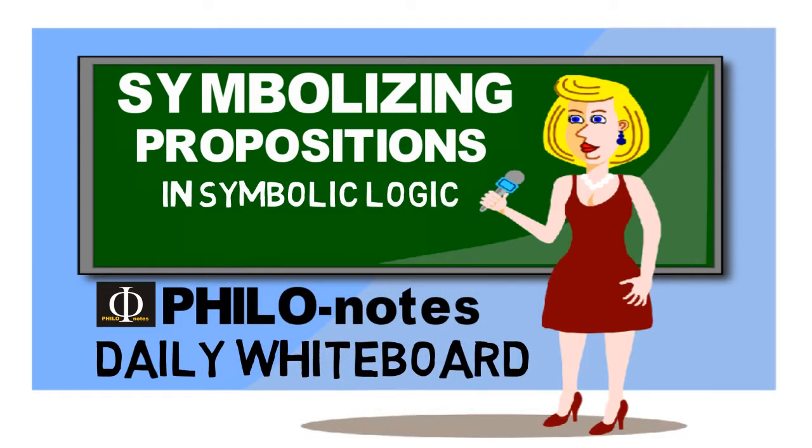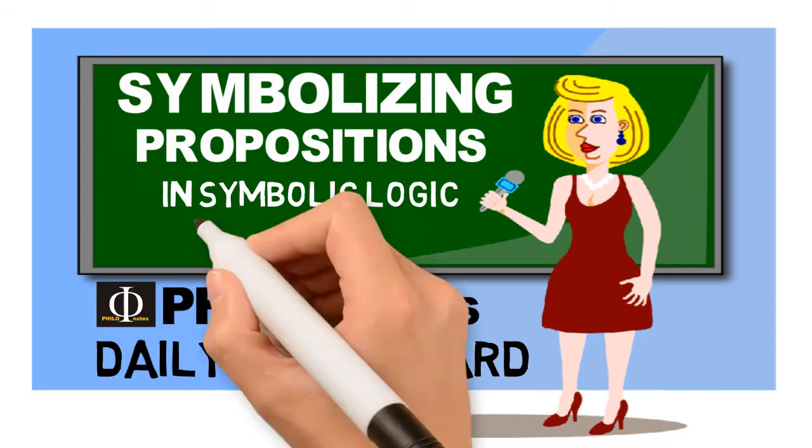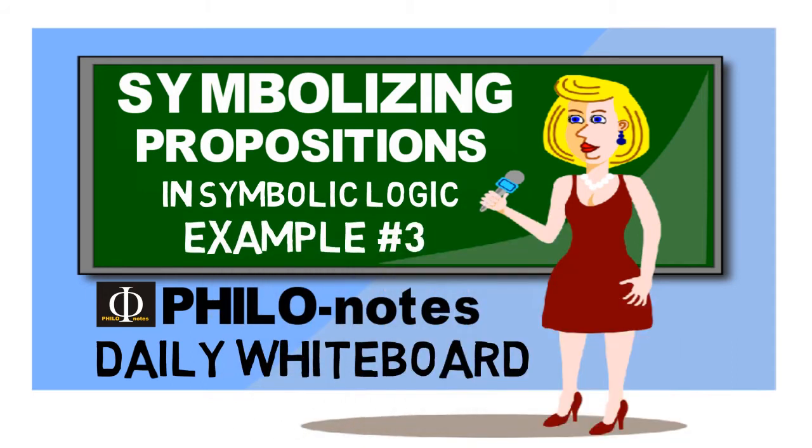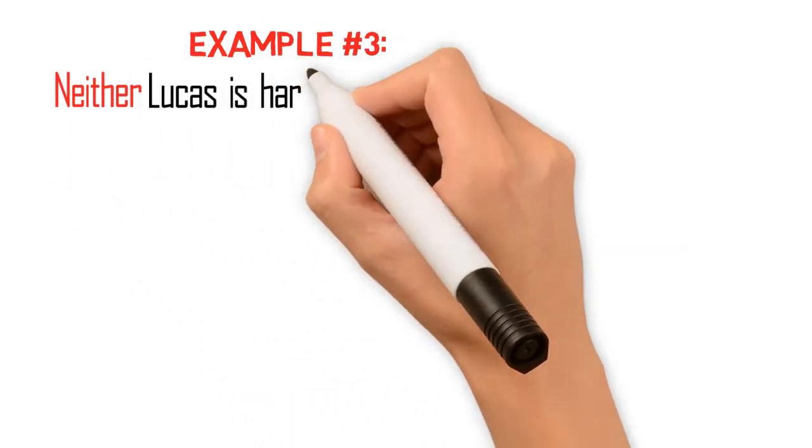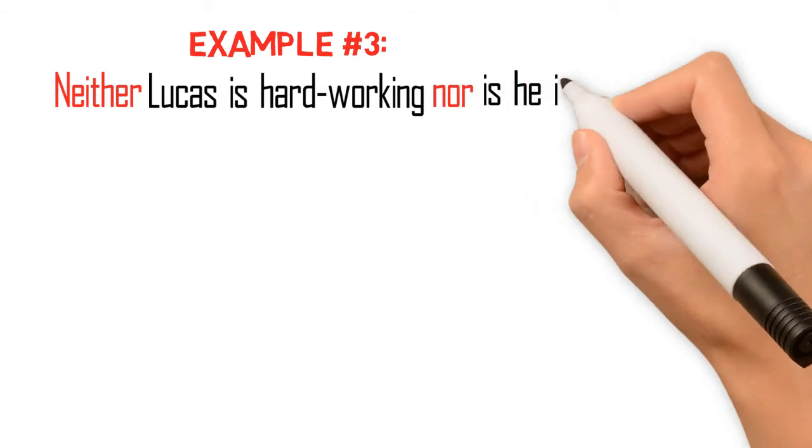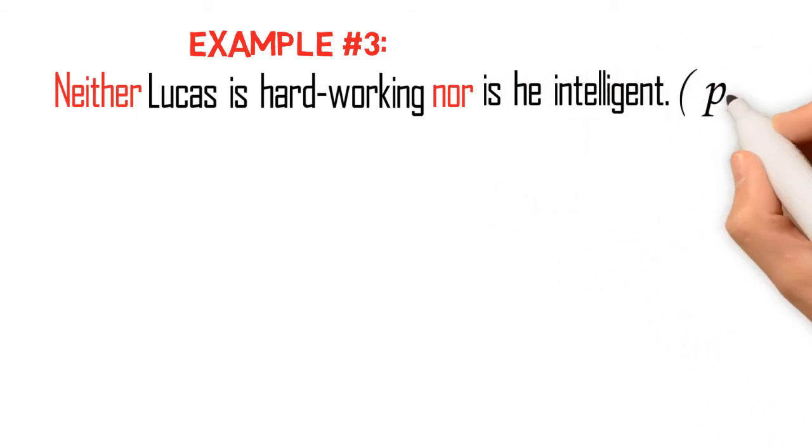Now, let's analyze and symbolize example number 3. Suppose we have this proposition: Neither Lucas is hardworking nor is he intelligent, where P and Q represent these component statements.